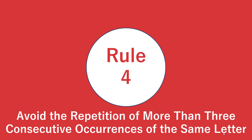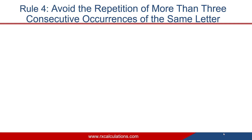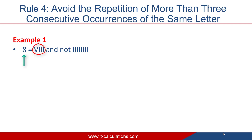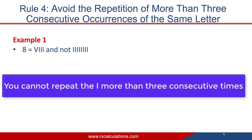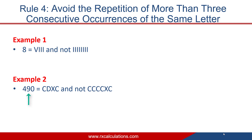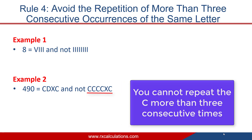Rule number 4 says to avoid the repetition of more than three consecutive occurrences of the same letter. For example, the number 8 is written as VIII — three I's after the V. You cannot write it as IIII, because you are repeating I more than three consecutive times. Another example: 490 is written as CDXC, not CCCXC, because in CCCXC you are repeating C more than three consecutive times.